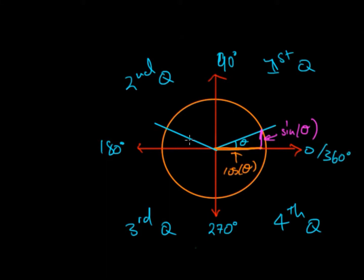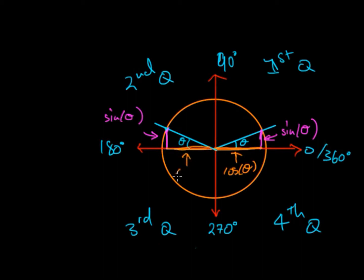If we take another line which has an equal angle, then take that particular point and go down, we see that the magnitude of sine theta is the same. The magnitude of this sine theta is equal to that sine theta, and you can see that graphically. The magnitude of cos theta is also the same. So if we have an angle against the x-axis and then put a line on the other side, due to the symmetry or quadrant properties, the sine and cos magnitudes will be equal.